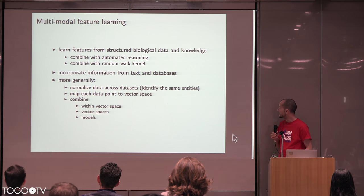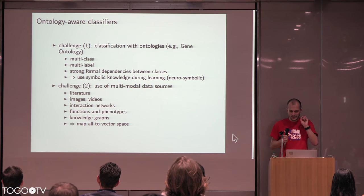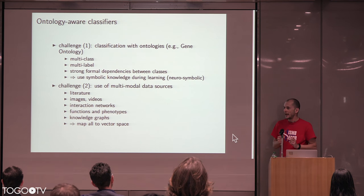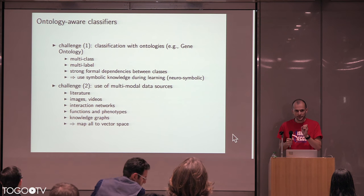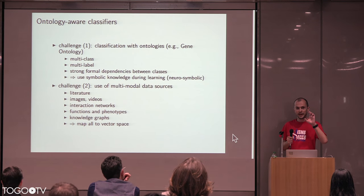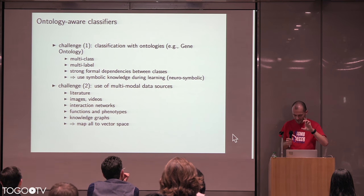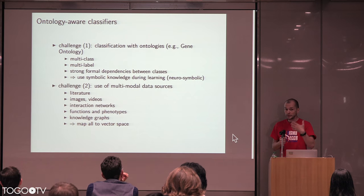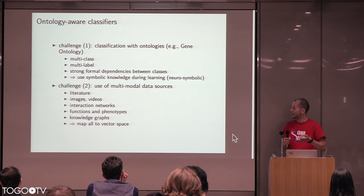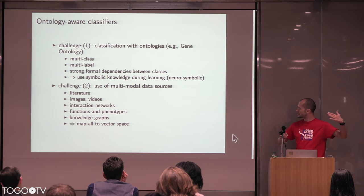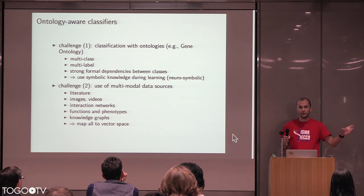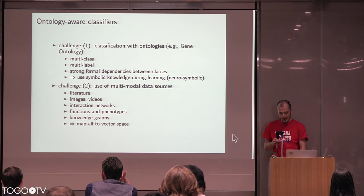There is another case where this is interestingly applied — an entirely different application: when we want to learn how to classify something with an ontology. The most informative statements we can make about an entity such as a protein is that it has a certain type of relation to an ontology class — a function, phenotype, or disease. These are the statements for which we usually want to make a prediction that can be tested experimentally. But it is very difficult because it is generally a multi-class, multi-label, very large-scale problem with many formal dependencies. We also want to use different types of data to make this prediction.